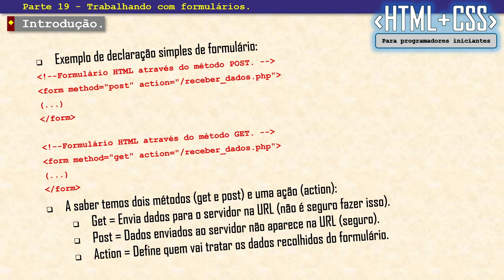A declaração formulária também é de fechamento — abre form, fecha barra form. Essa é a estrutura do código que vai trabalhar com formulários no teu site. O método GET envia os dados para o servidor na própria URL — lá em cima no navegador, no endereço, os dados aparecerão ali. A gente percebe que isso não é seguro, então embora exista o método GET, a gente acaba não fazendo uso dele.